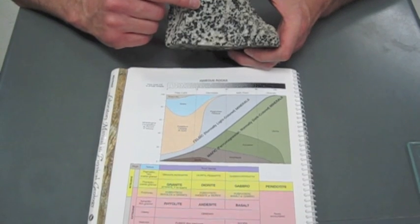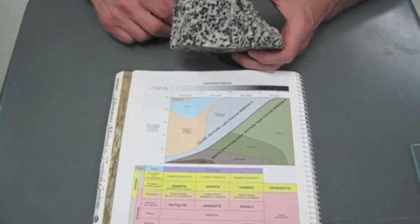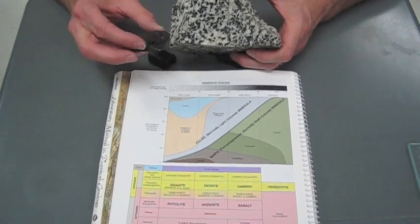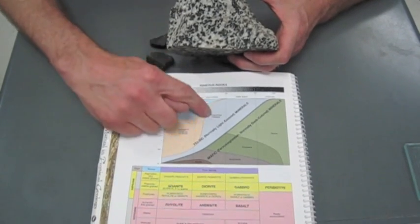The minerals that are in here include some feldspar that's light-colored, and then there's some darker colored minerals, commonly things like pyroxenes or maybe some amphiboles. If you look closely, you'd find some of those. So it's a mixture of light and dark colored minerals, intermediate in composition.